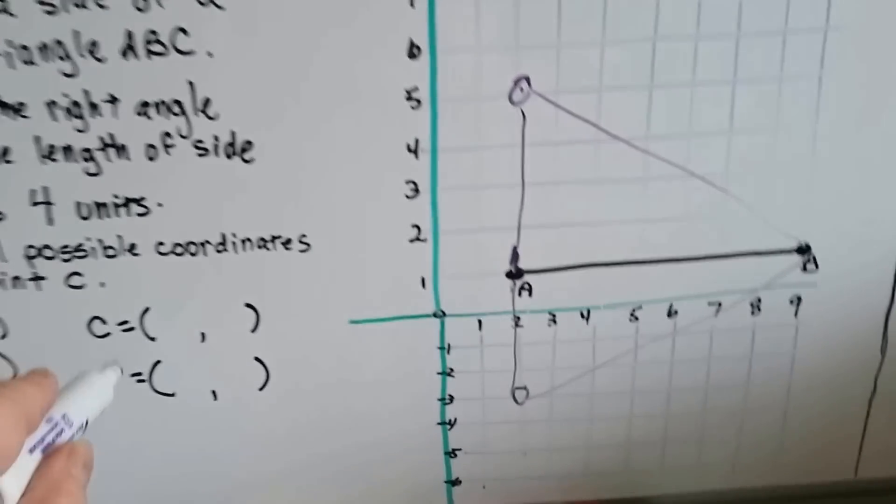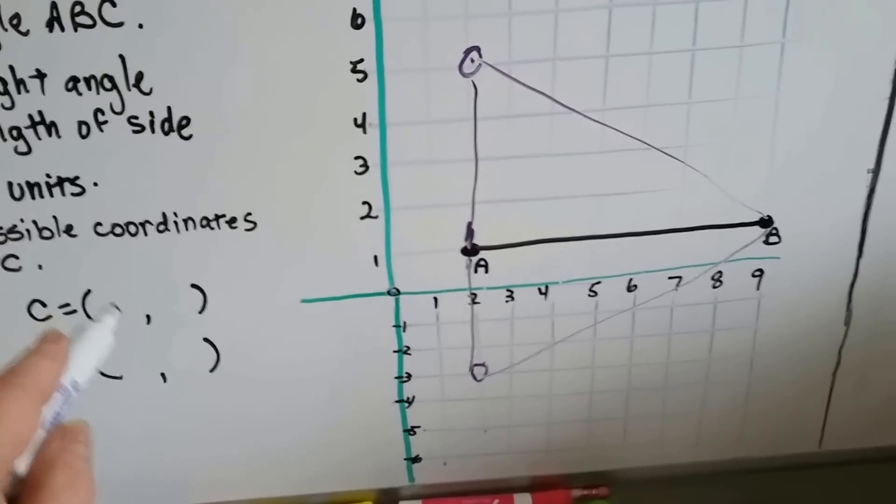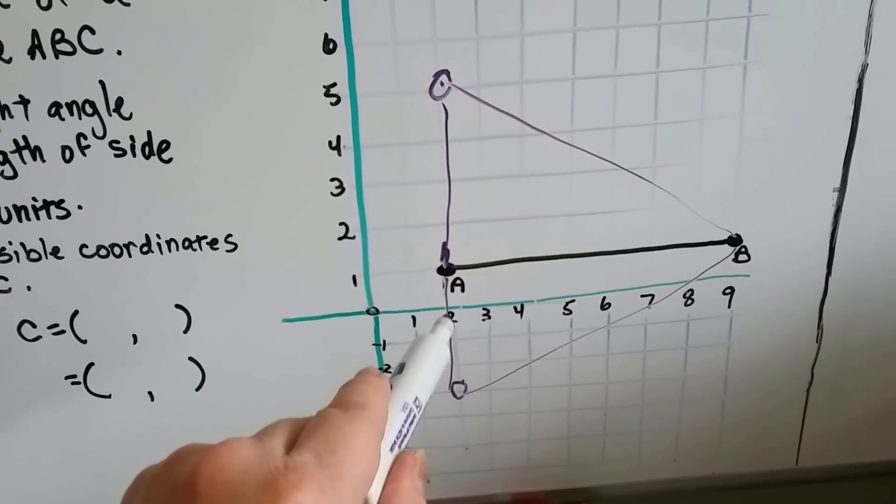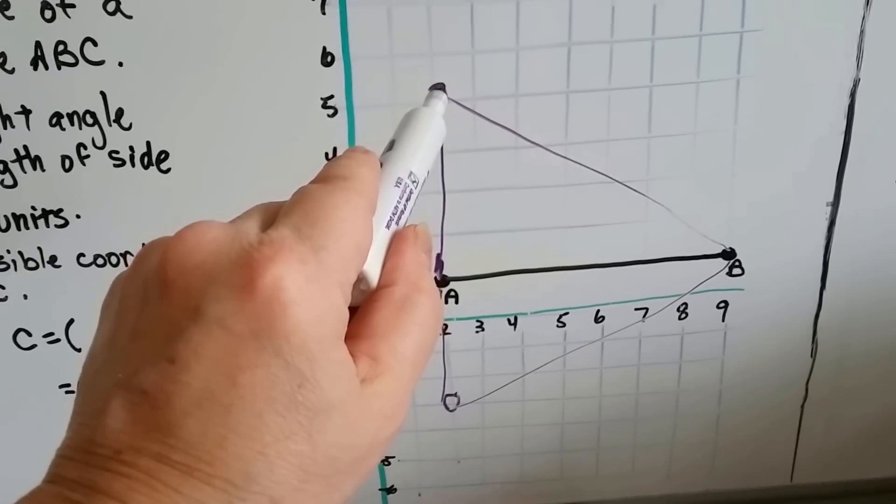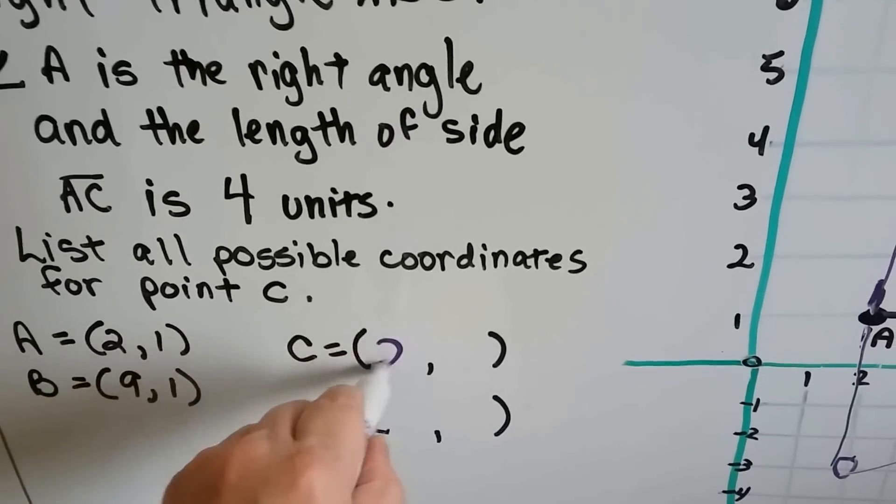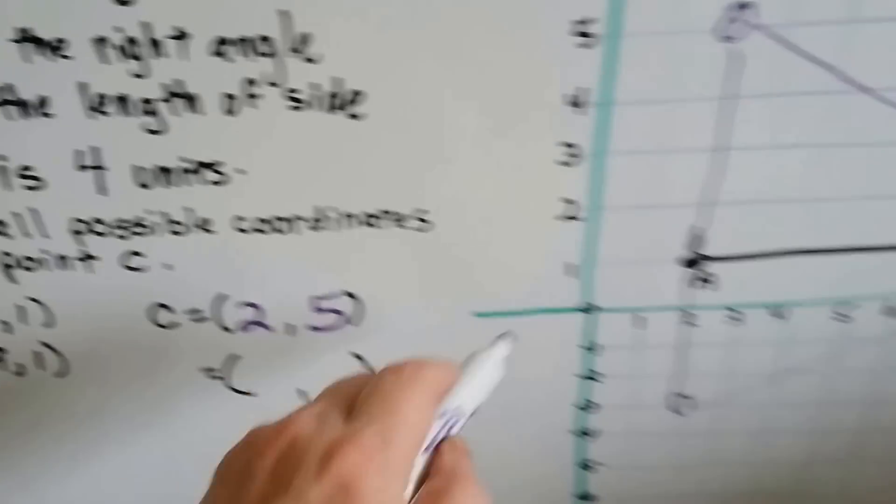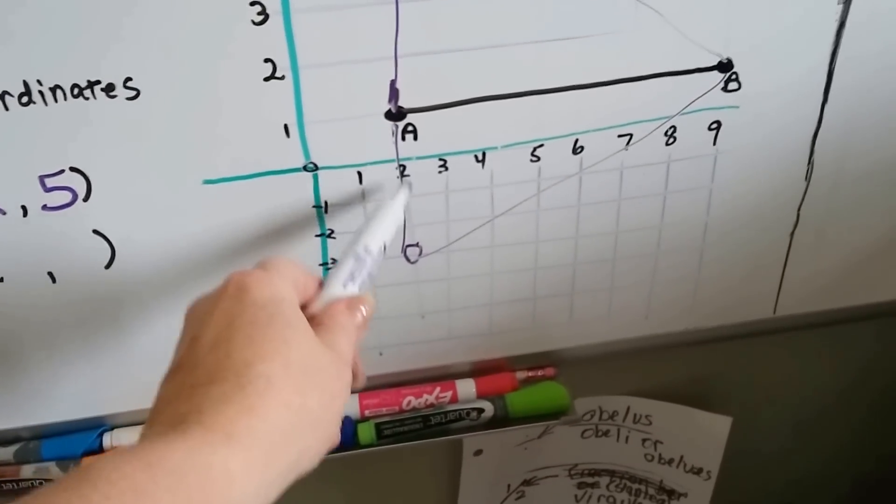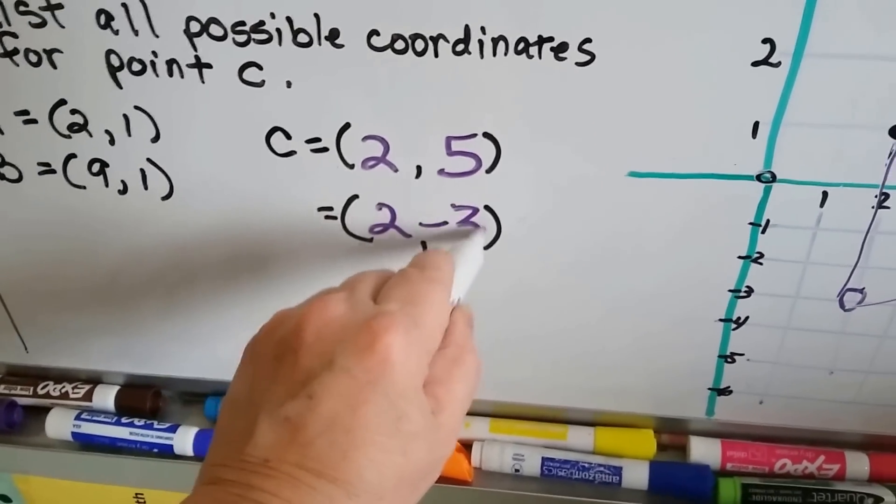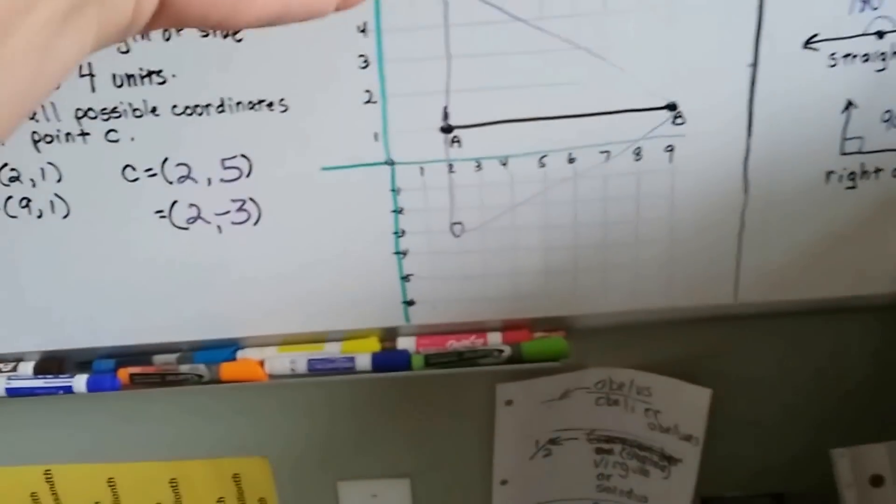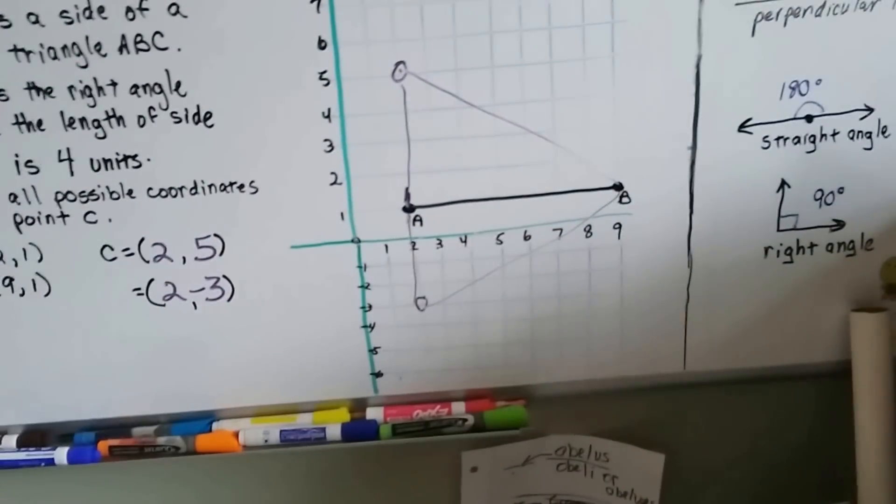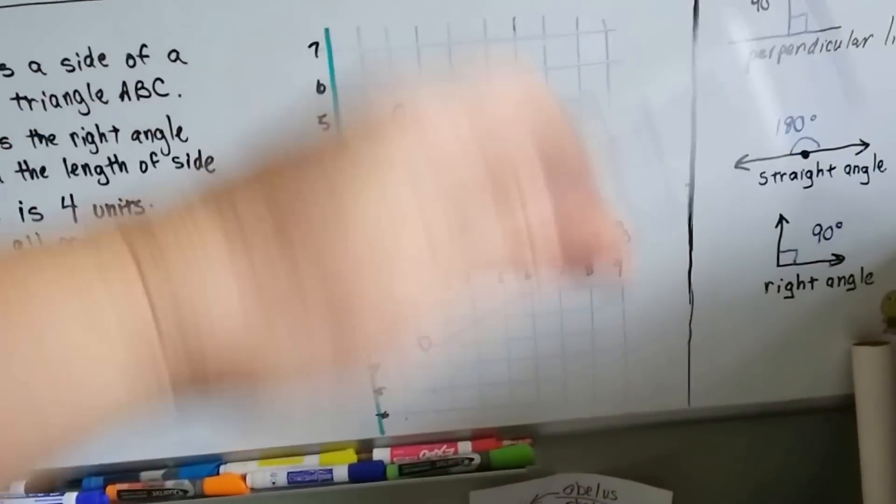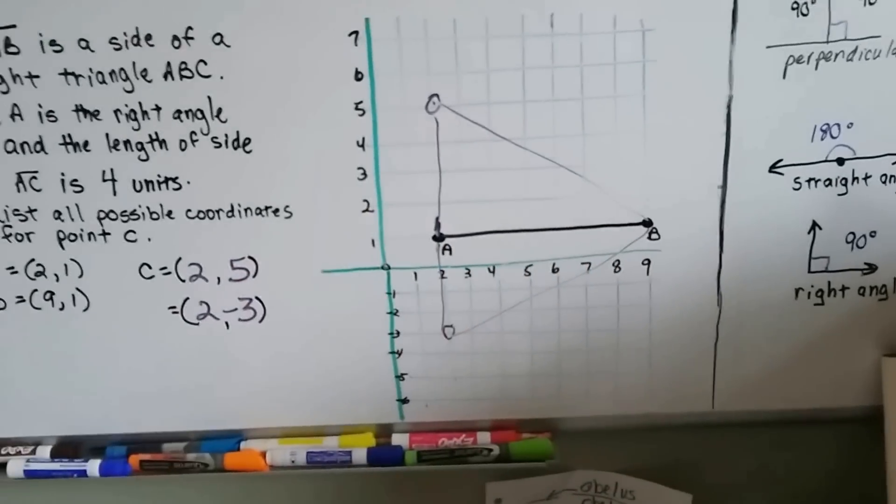So, what are the possible coordinates for angle C? It would be 2 on the x line. This is x. It would be 2 comma 5. And then the other possibility would be 2 comma negative 3. Because it might be this way or it might have a transformation and flip down this way. It looks like there's a line of symmetry coming through them.